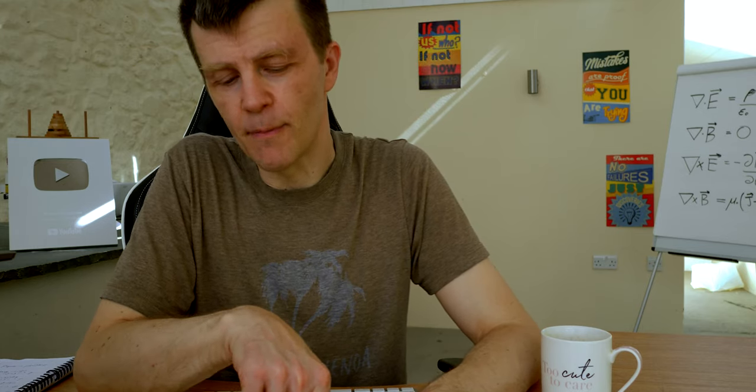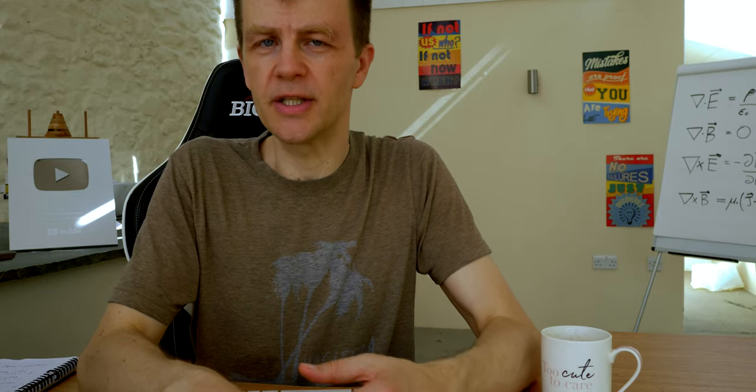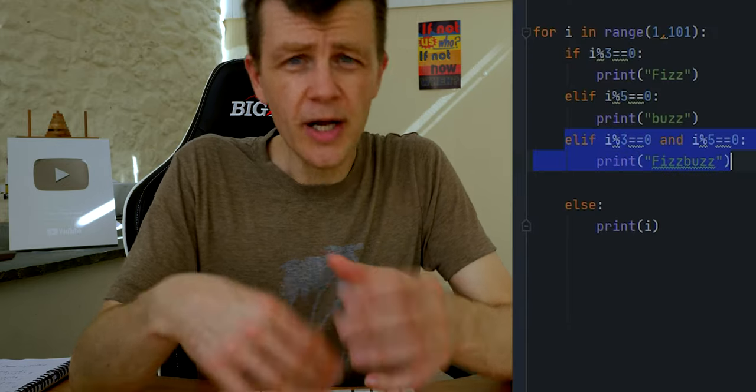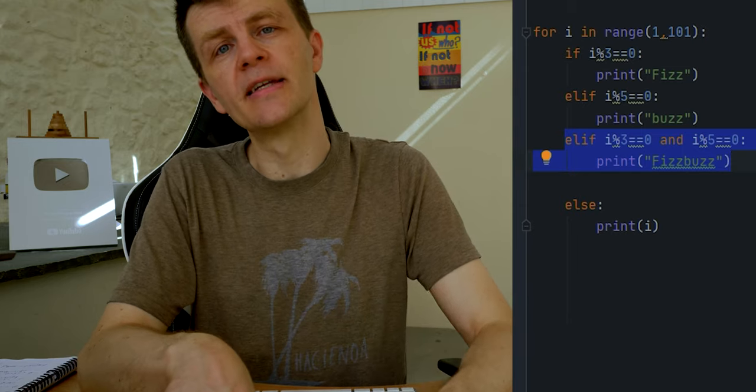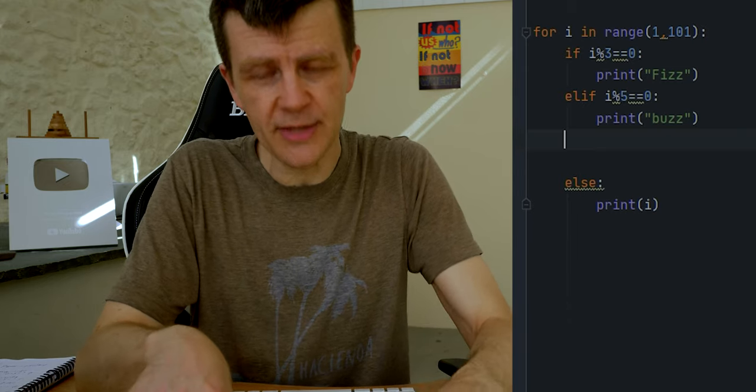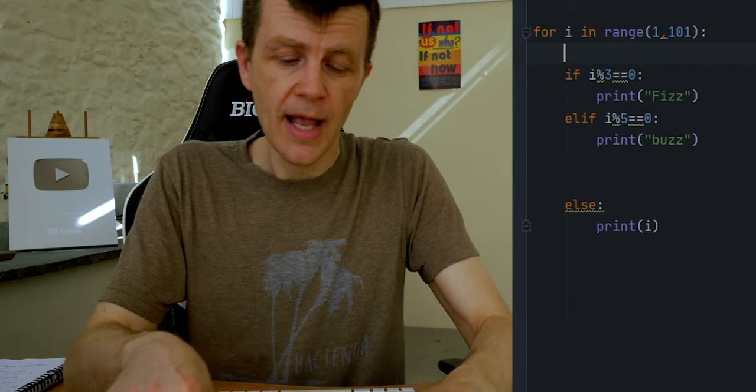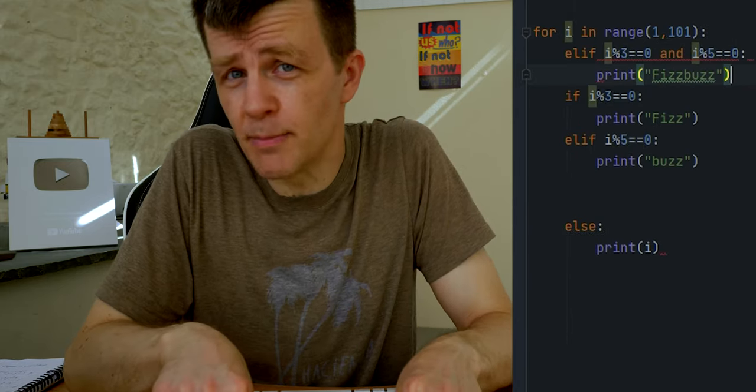So we need to restructure this if elif statement that we have here to work differently. So the first thing we'll test for is the three and the five. Okay, so we'll test for that first. If that condition is met then we'll print fizz buzz.